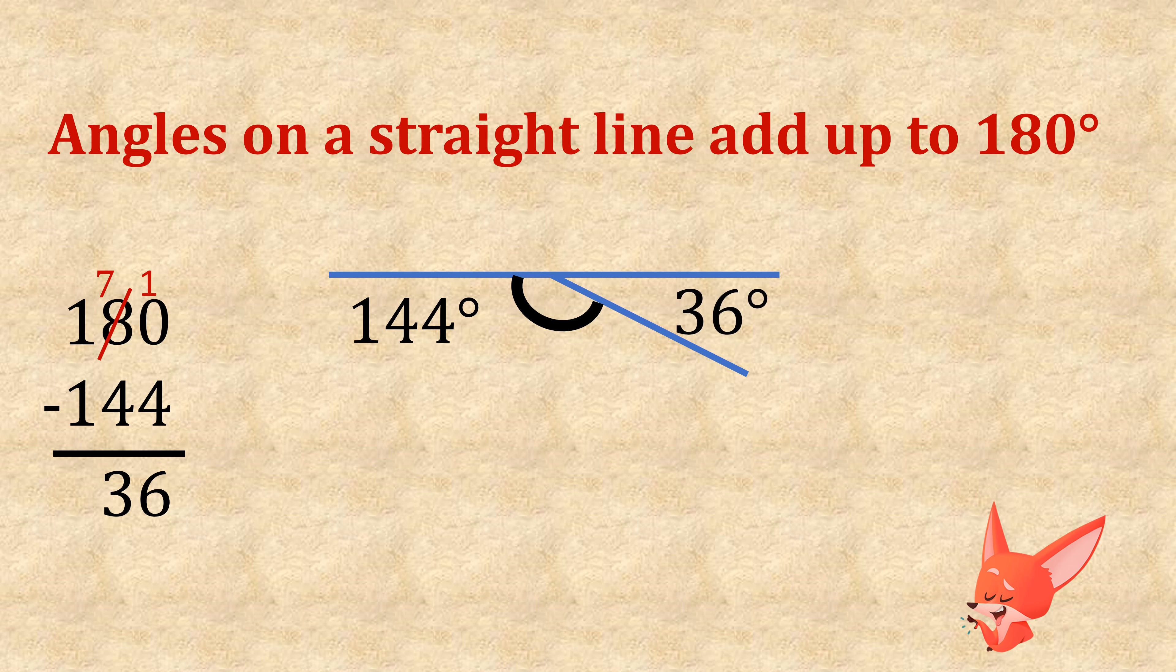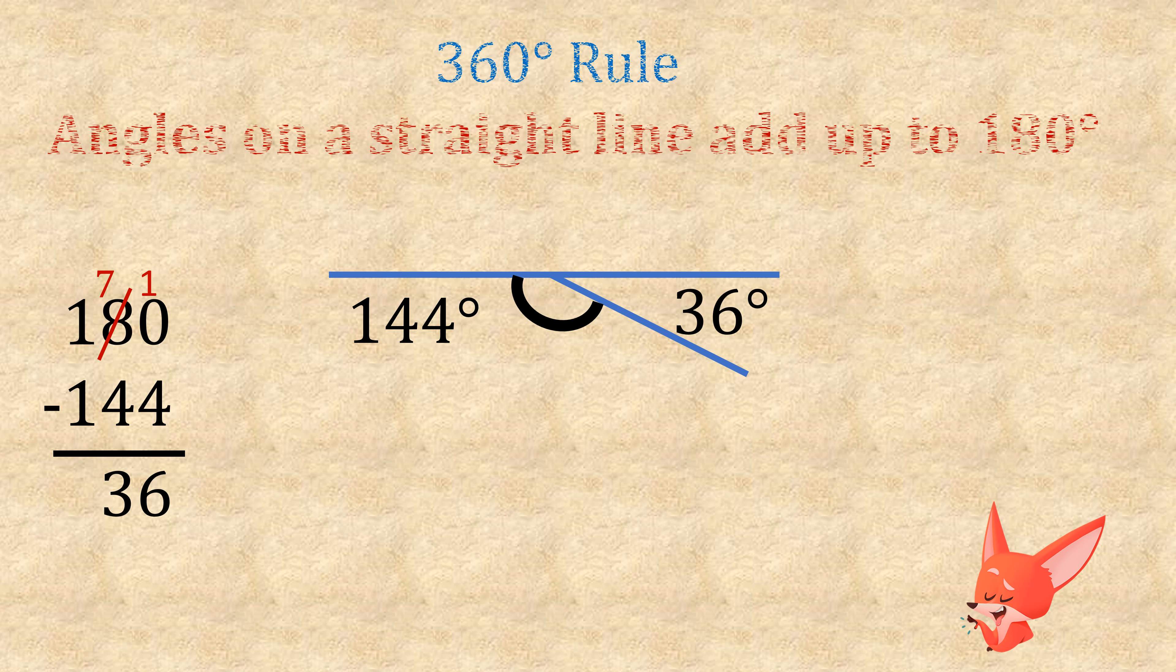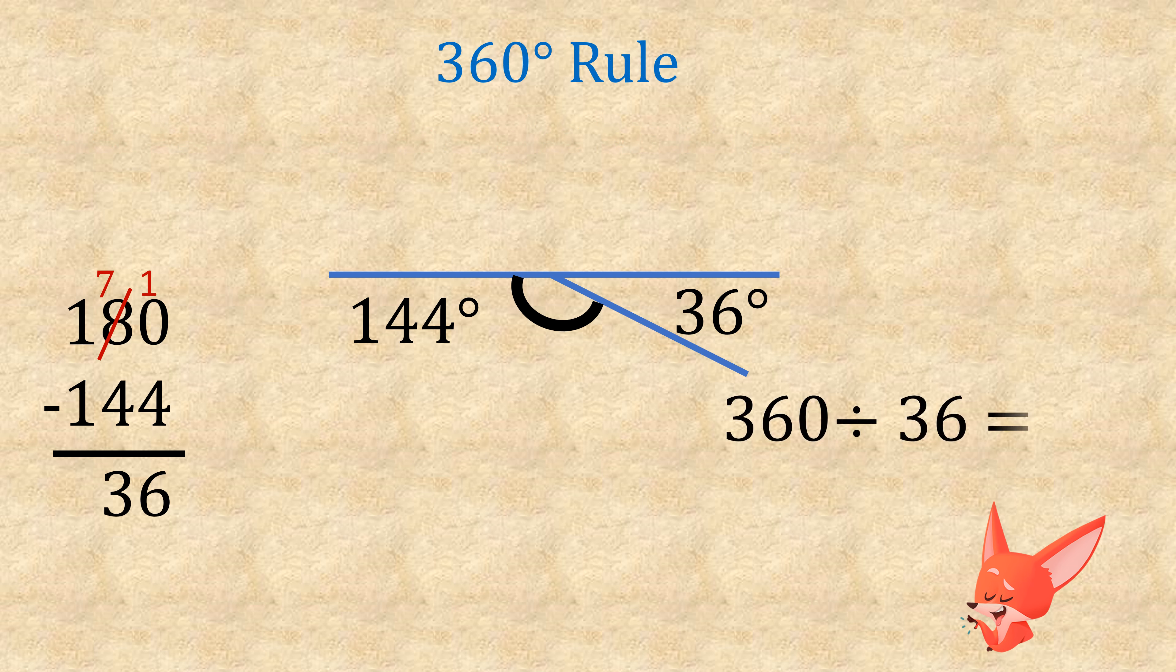All we need to do is write 360 divided by 36, which is of course 10. So this polygon has 10 sides.